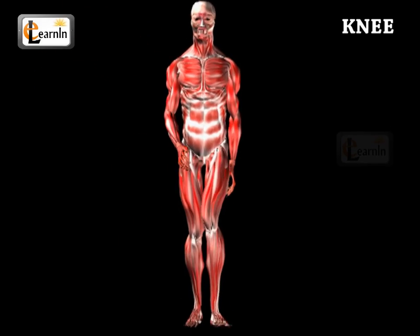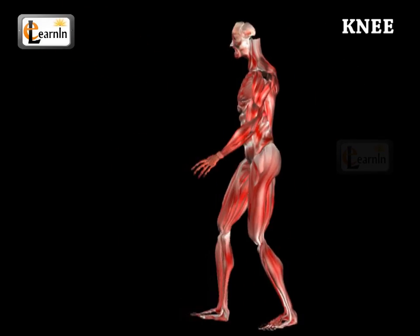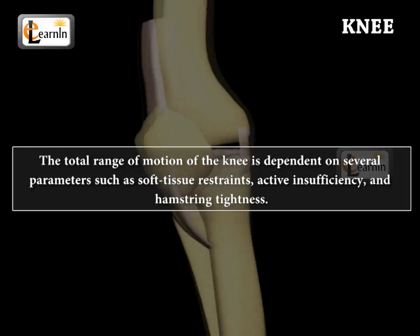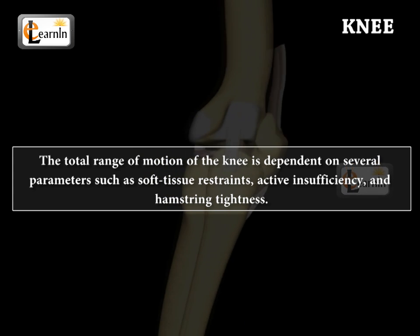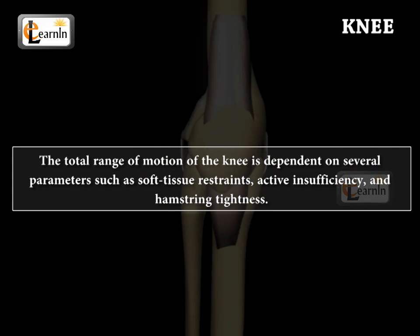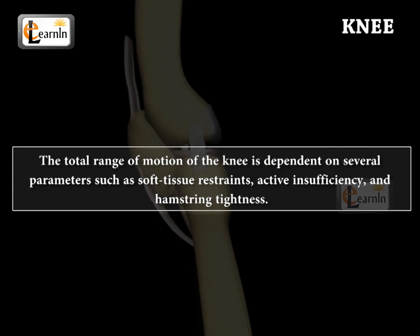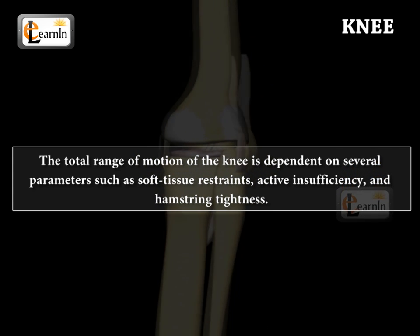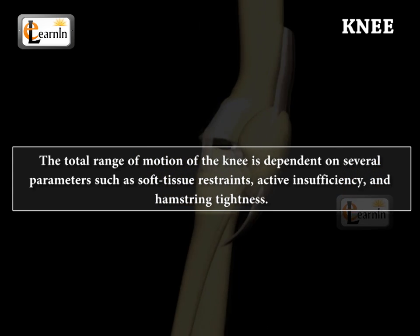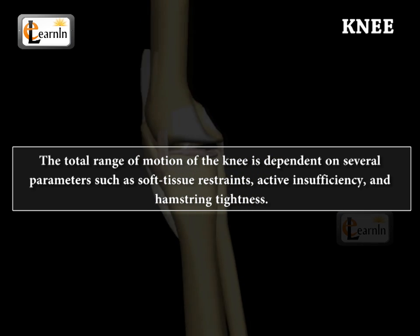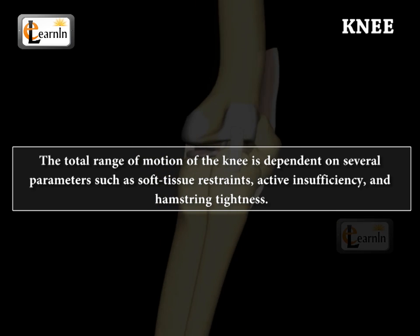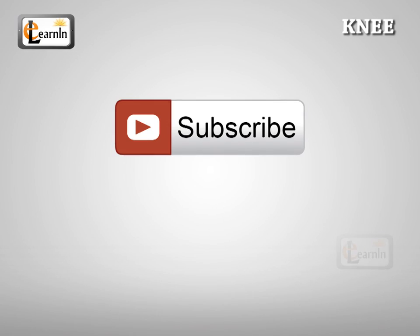These act in tandem with the muscles of the leg. The total range of motion of the knee is dependent upon several parameters, such as soft tissue restraints, active insufficiency, and hamstring tightness.